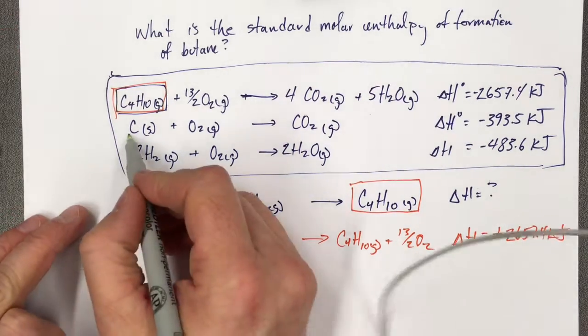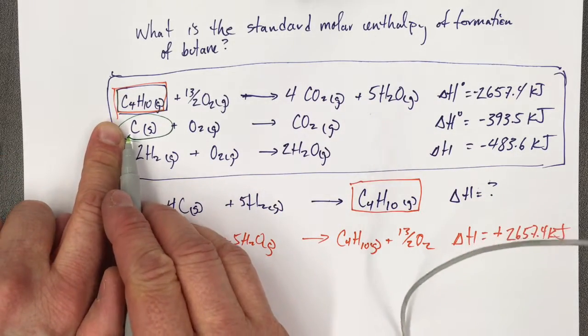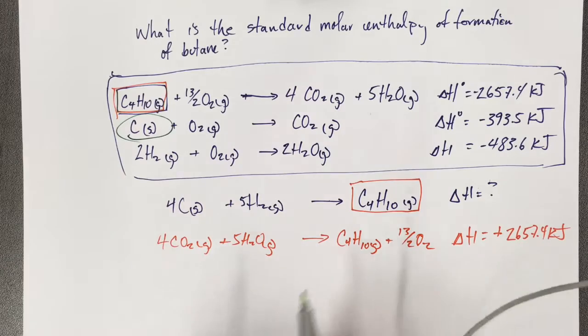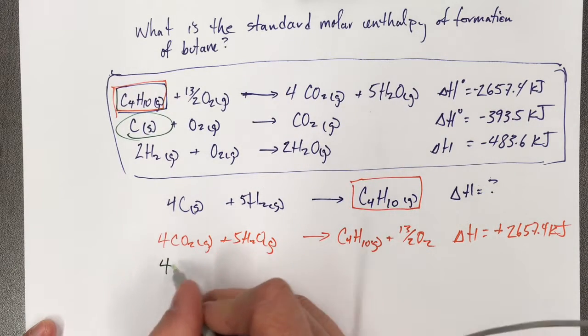And then in my next reaction, I've got carbon. Well, I want carbons in the reactants, and they're in the reactants. But you'll see that this is 4 and this is 1. So what I'm going to do is take that second reaction, and I'm going to multiply it by 4.